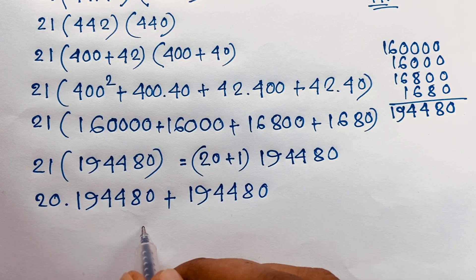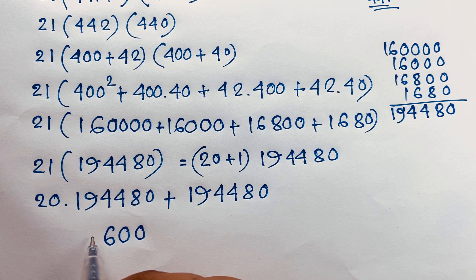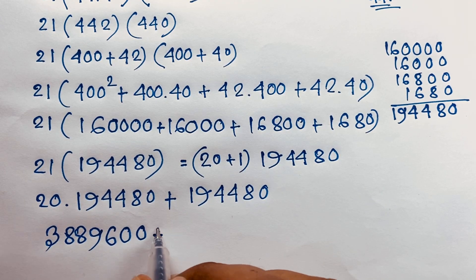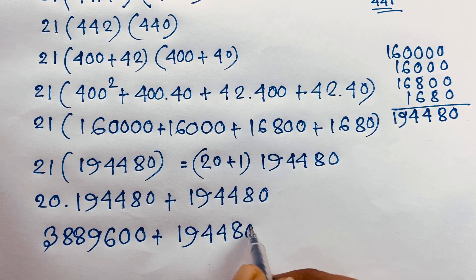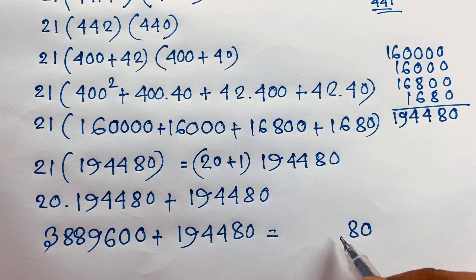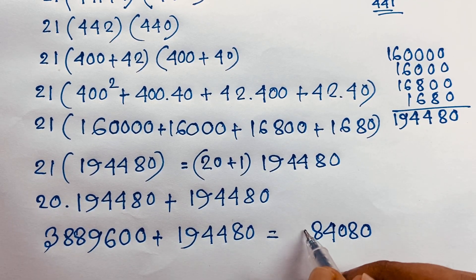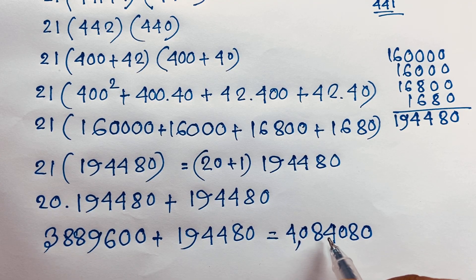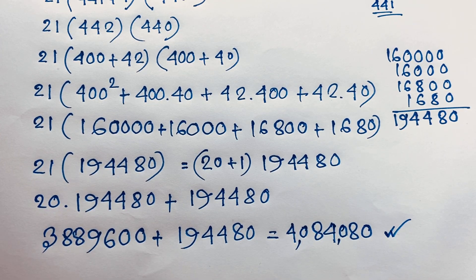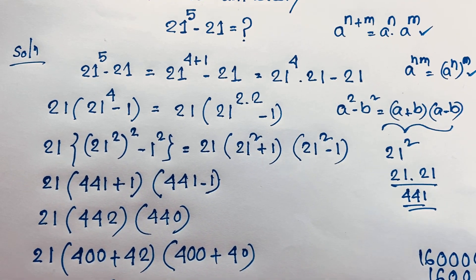So 3,889,600 plus 194,480 equals 4,084,080. This is our final answer. Thank you all. If you enjoyed this math Olympiad question, please subscribe to my channel for other interesting videos. Goodbye, take care everyone, and have a good day.